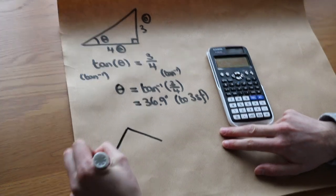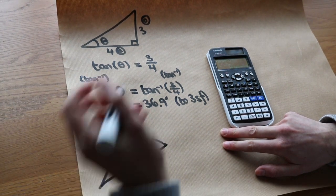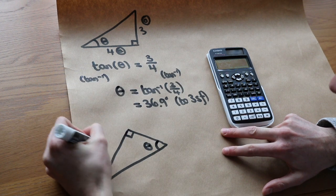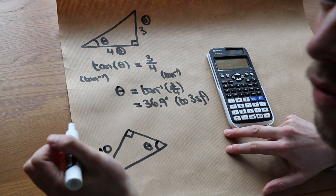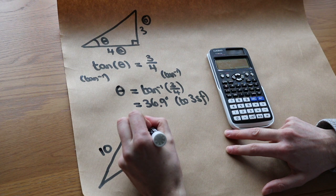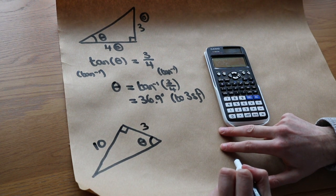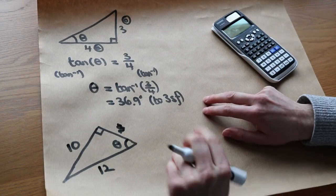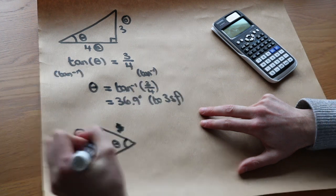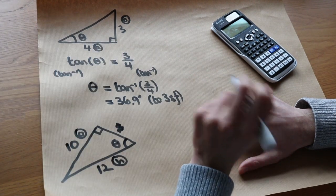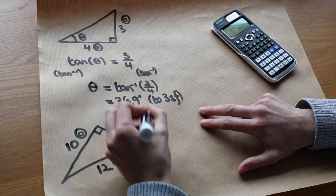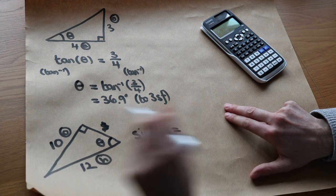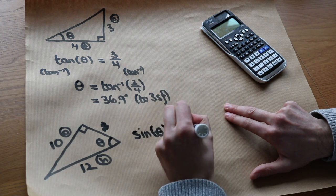I'm going to give you another triangle. We don't know this angle. Let's say that's 10, and let's say that side is 12 here. And we want to find this angle here. We label the sides. That's the opposite, that's the hypotenuse. SOHCAHTOA, so. So we're going to write sine of the angle is equal to the opposite, which is 10, over the hypotenuse, which is 12.